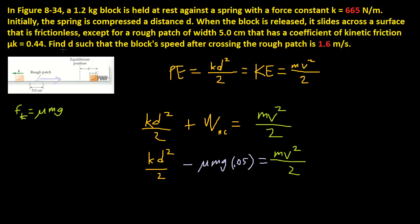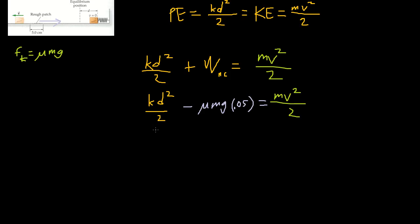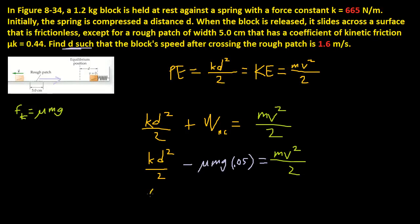It says find d such that the block speed after crossing rough patch is 1.6 meters. So now I guess we just solve for d. That's all we have to do. So let's do that. So 665 times d squared,